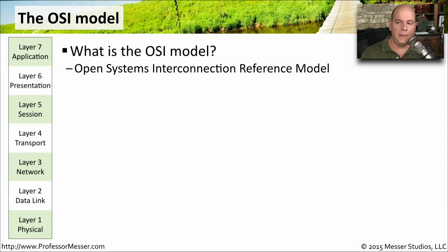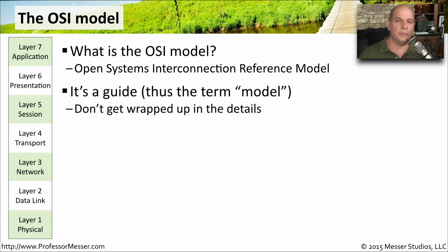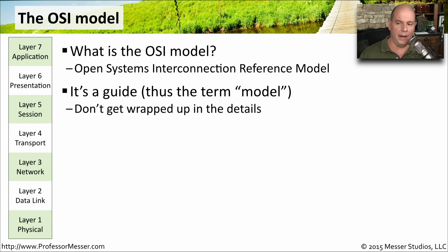The OSI model is the Open Systems Interconnection Reference Model. It's a way to describe the process that data takes when it leaves one device, goes across the network, and is received by another device. Since 'model' is in the name, that implies this is more of a guideline — not something where we can definitively say that a particular protocol runs in a particular layer of the OSI model, but it does give us a general idea of how this operates.